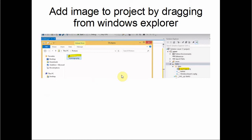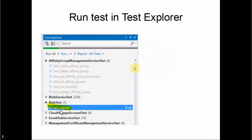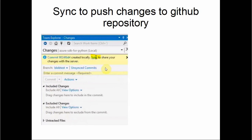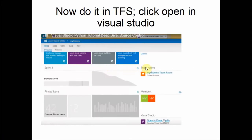We can add an image to the project by dragging a picture from the Explorer window into the project. This is the image we're going to load up to the cloud. We run the test, exploring 'test upload,' and then we can commit our changes by clicking the Commit button, adding a comment, and then clicking Sync to push the changes to the GitHub repository.